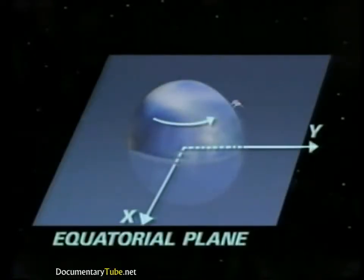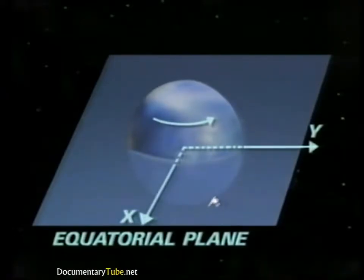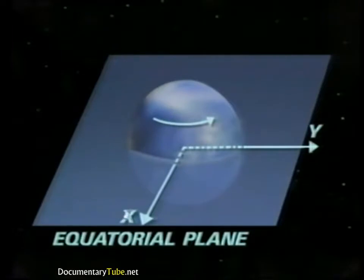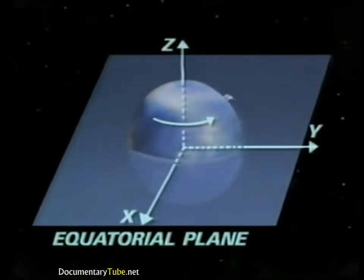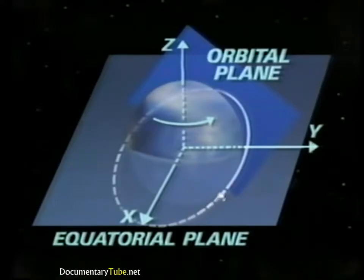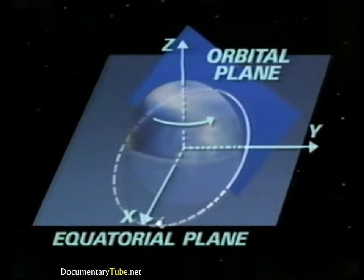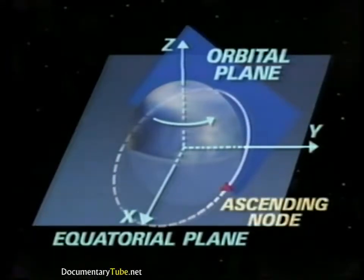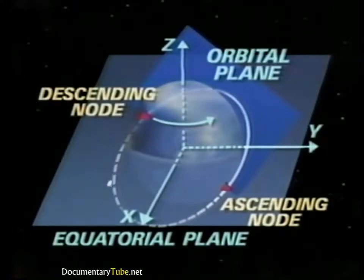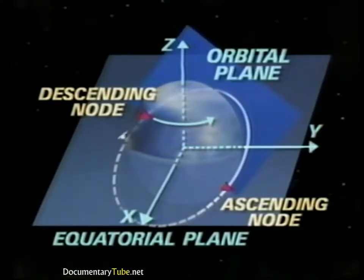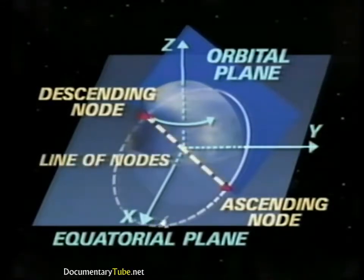The XY plane is the Earth's equatorial plane. The positive X axis points to the vernal equinox — the point where the Sun appears to cross the Earth's equator on its way north, on the first day of spring each year. The Z axis is along the Earth's spin axis toward the north pole. Nodes are points in a satellite's orbit which intersect the Earth's equatorial plane. The ascending node is the point at which the spacecraft crosses the equator going from south to north, and the descending node is where it crosses going from north to south. The line joining the two nodes is called the line of nodes.